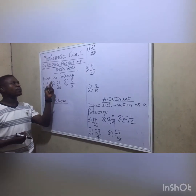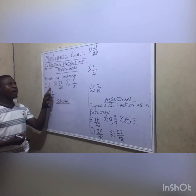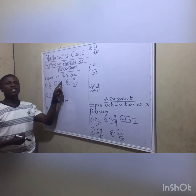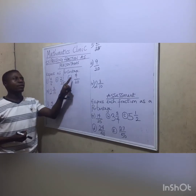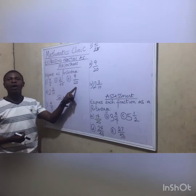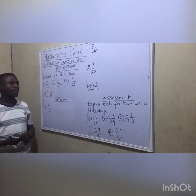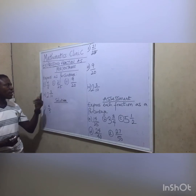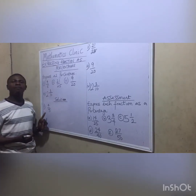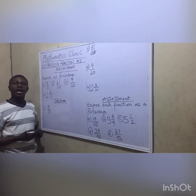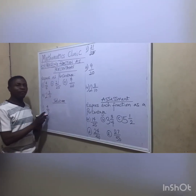Now let's look at some examples. Express as percentage: 4 over 5, 21 over 25, 9 over 20, and 2 and 3 over 10. Let's look at the first one — if we are given the fraction 4 over 5 and asked to change it to percentage.